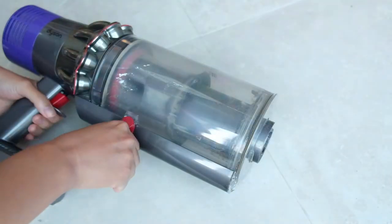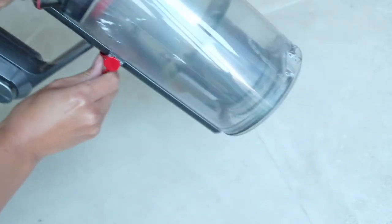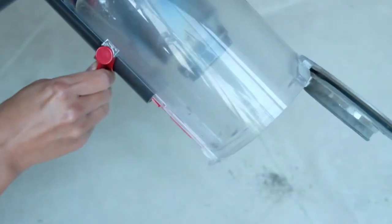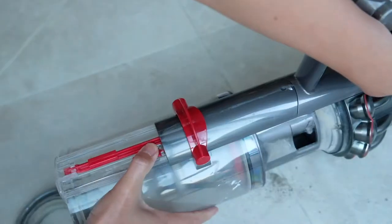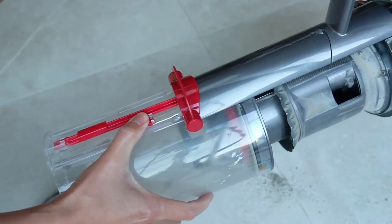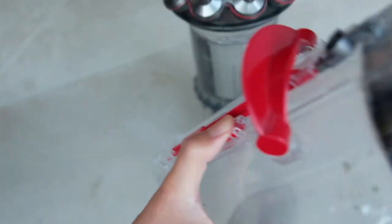For the main body of the vacuum machine, to take it apart, open it up just as we always do when emptying the bin. Then you will see a red arrow here. Press it while dragging the bin out. Now you have the cyclone and the bin separated. Let's clean the bin first.